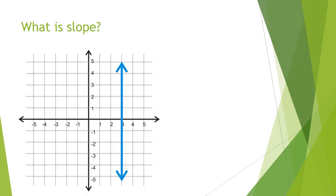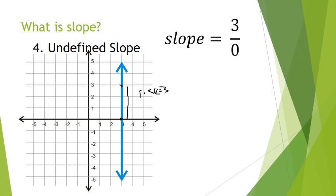Our last one is called the undefined slope. With this line, let's take these two points. We've got a rise of 1, 2, 3—a rise of 3. And we've got a run of 0. So when we put our values in, we've got 3 on top and 0 on the bottom.